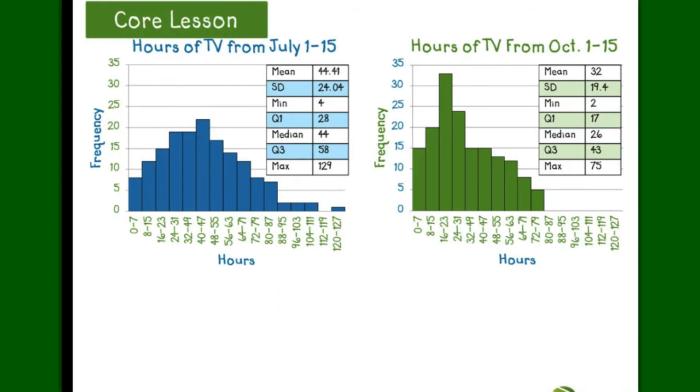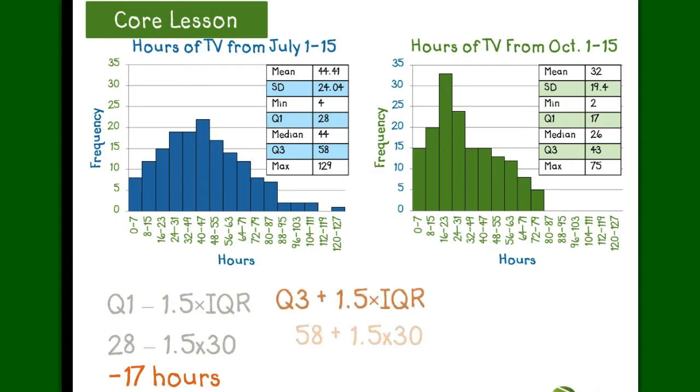If we check for outliers in July, below quartile 1, we find that we would have to be below negative 17 hours, or we would have to be above 103 hours. This means that in July, the data points above 103 are outliers, of which there are 3.